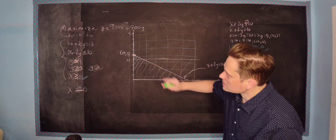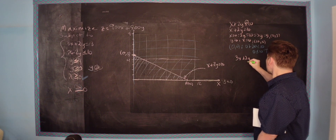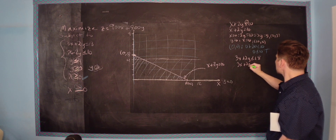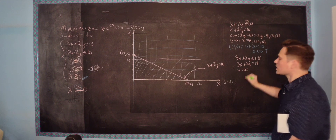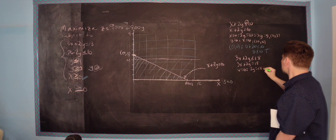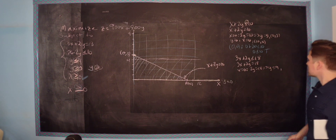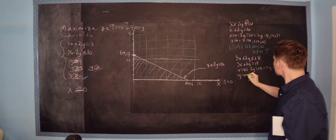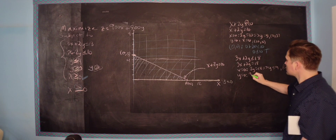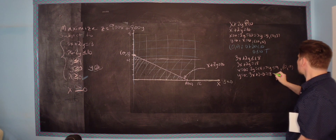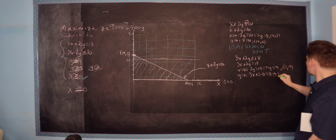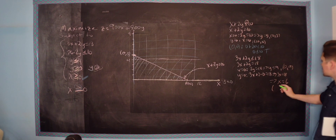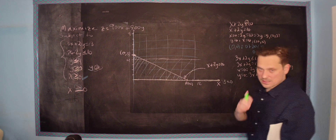Next: 3x plus 2y is less than or equal to 18. Again, pretend it's an equation to mark the boundary line: 3x plus 2y equals 18. When x is 0, you get 2y equals 18, so y equals 9 — that's the point (0, 9). When y is 0, you get 3x equals 18, so x equals 6 — that's the point (6, 0).